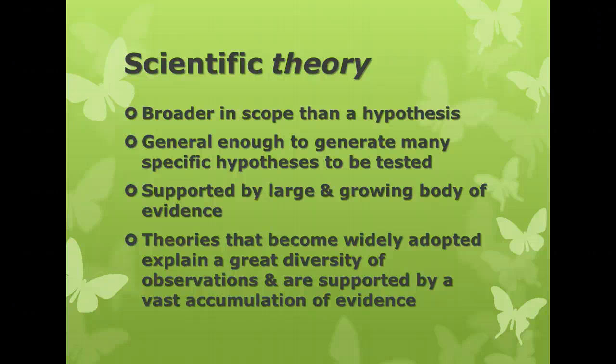A scientific theory — in science, we use the word theory differently than in everyday language. In everyday language, theory often means somebody's idea about something. In science, it's broader in scope than a hypothesis. A theory is general enough to generate numerous specific hypotheses that can be tested. A scientific theory is supported by a large and growing body of evidence. Theories that become widely adopted explain many different observations and are supported by a huge amount of evidence — so it means much more in science than in normal everyday language.